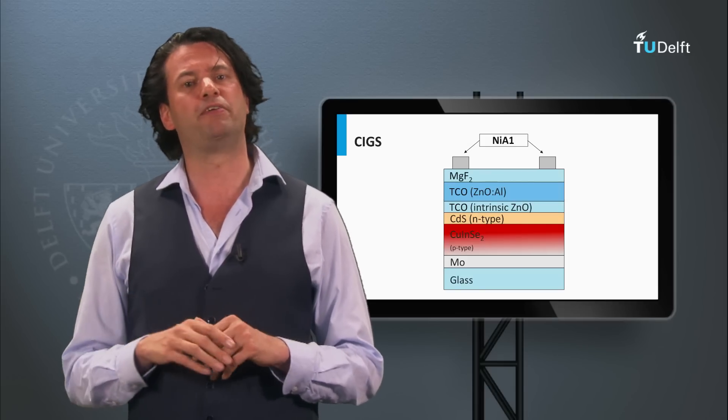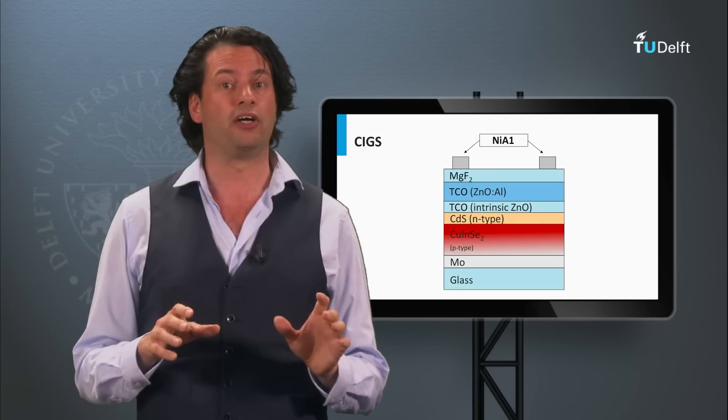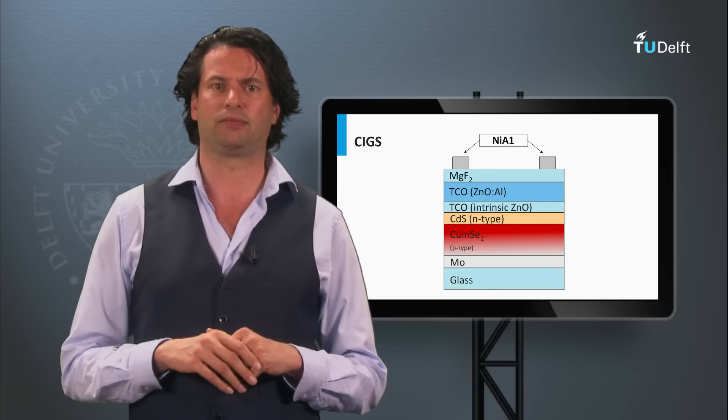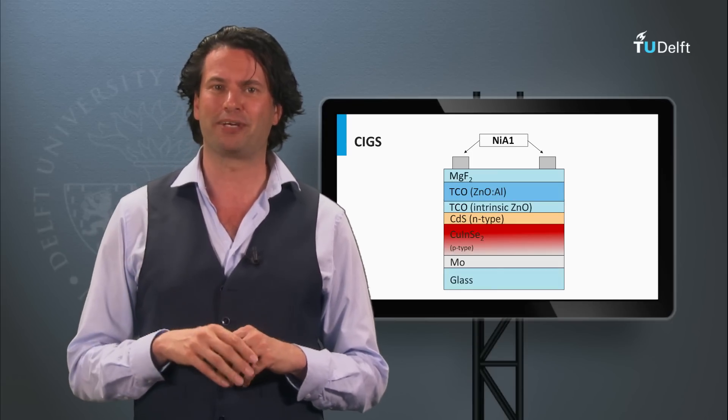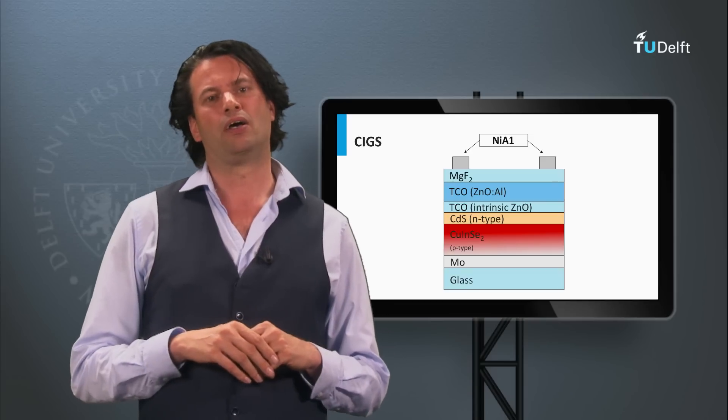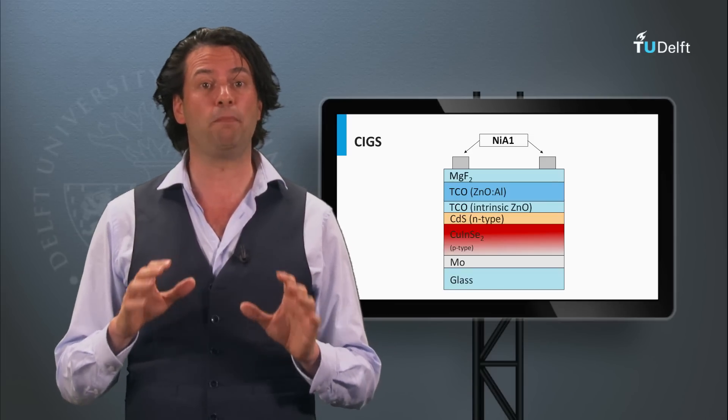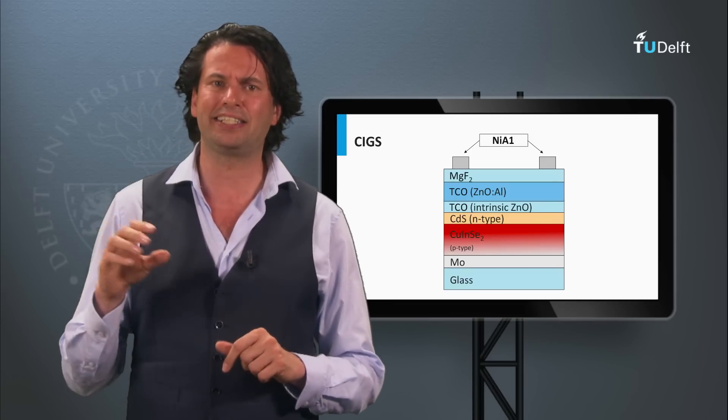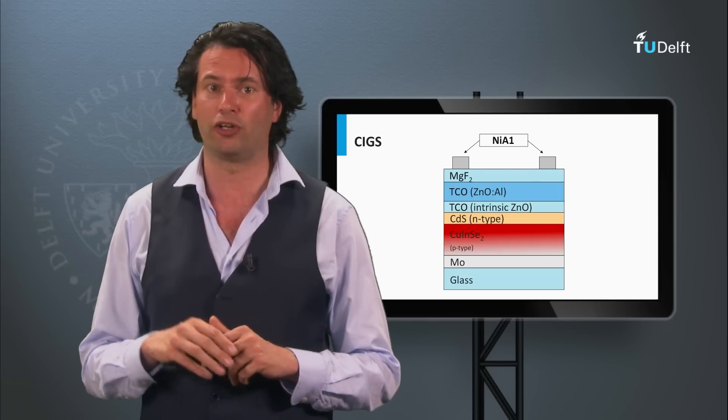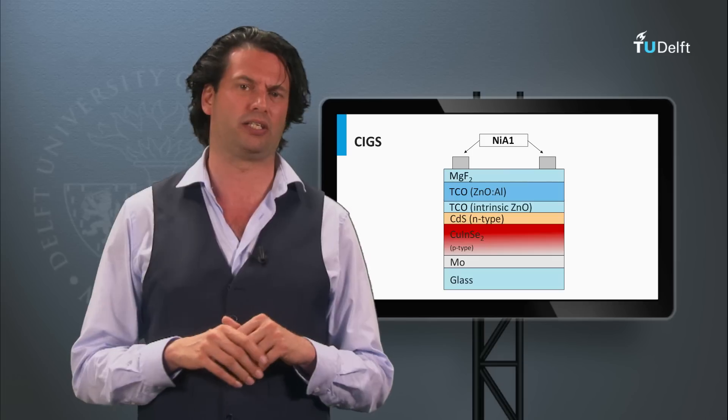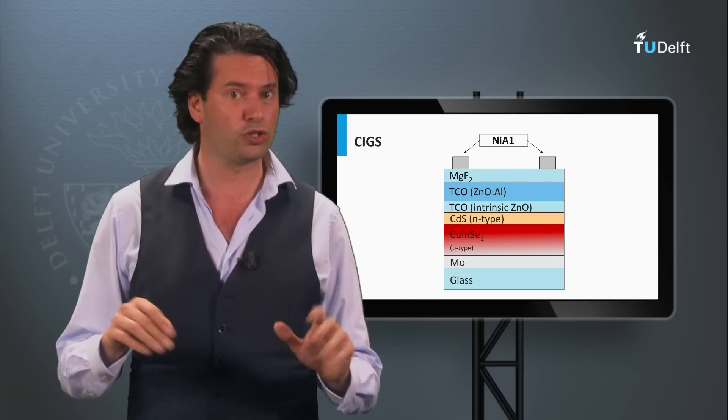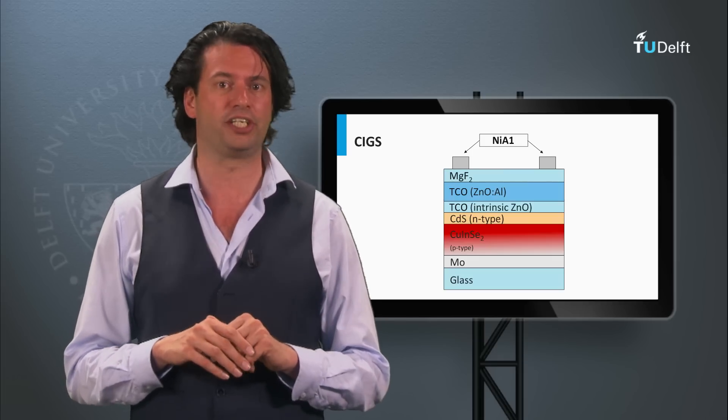Another thin film PV technology based on a chalcogenide alloy is CIGS, which stands for copper-indium-gallium-selenide. Among the thin film PV technologies it has the highest demonstrated conversion efficiency on lab scale, just above 20 percent. It belongs to the second generation PV technology as well.